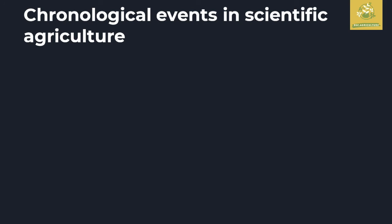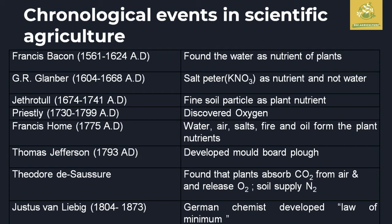Coming to the chronology of events in scientific agriculture: Francis Bacon found water as a nutrient of plant. Glauber found KNO3 as a nutrient, not water — showing differences between scientists. Jethro Tull found fine soil particles as plant nutrients. Priestley discovered oxygen. Francis Home identified water, air, salt, fire, and oil as plant nutrients.